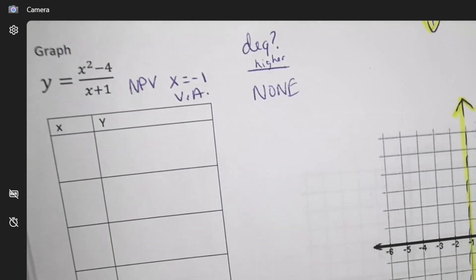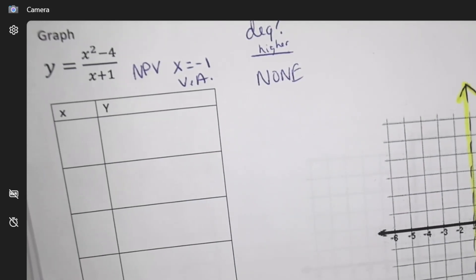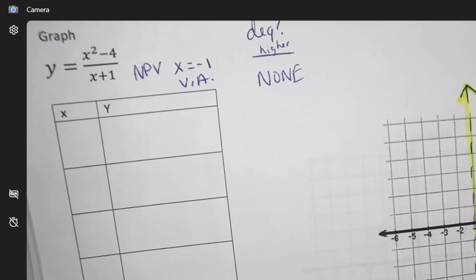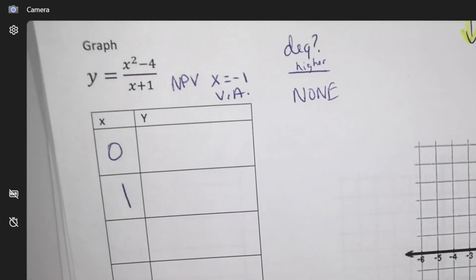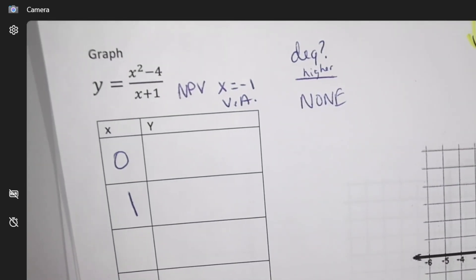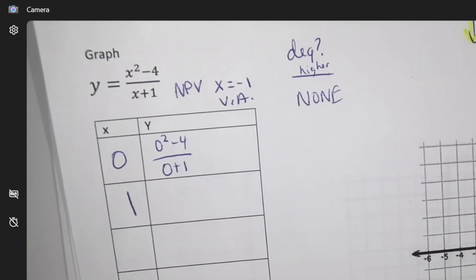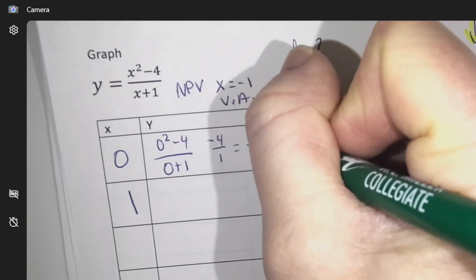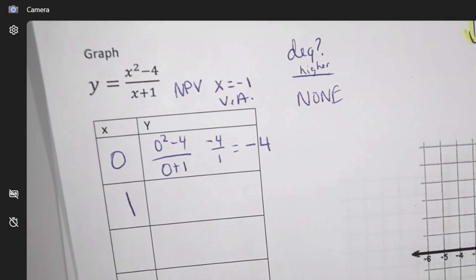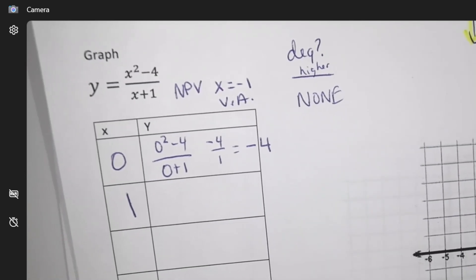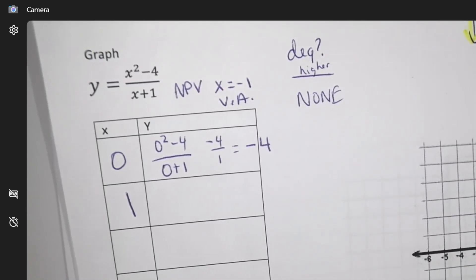Now we need to plot some points. I always pick a couple on each side of the asymptote. Since the asymptote is at negative one, I'm going to pick zero and one. Zero squared minus four over zero plus one gives us negative four, so the point is (0, −4). Then plug in one.